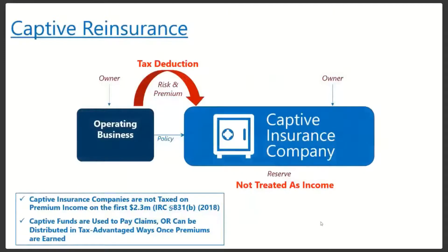Actuaries are going to help identify those risks. The actuary will account for the amount of premium that the operating business can transfer to the insurance company, and the owner of the business gets a tax deduction for that premium paid. That premium is going to be the lower of $2.3 million — which is the IRS maximum — or the amount the actuary has determined is the maximum premium. The lower of those two amounts is what we can take as the tax deduction for the business.